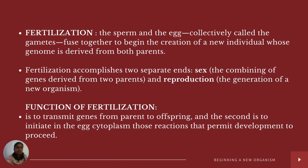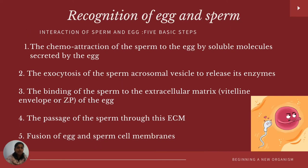The recognition and interaction of sperm and egg accomplishes five basic steps: first, the chemoattraction of sperm to the egg by soluble molecules secreted by the egg; second, the exocytosis of sperm acrosomal vesicles to release their enzymes; third, the binding of the sperm to the extracellular matrix of the egg; fourth, the passage of the sperm through this extracellular membrane; and finally, the fusion of the egg and sperm cell membranes.